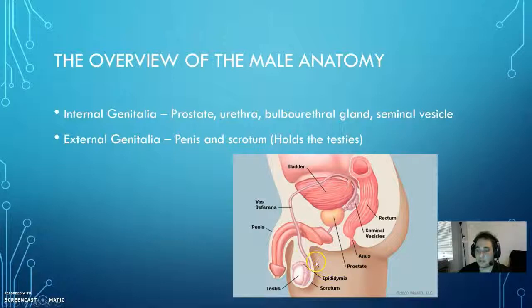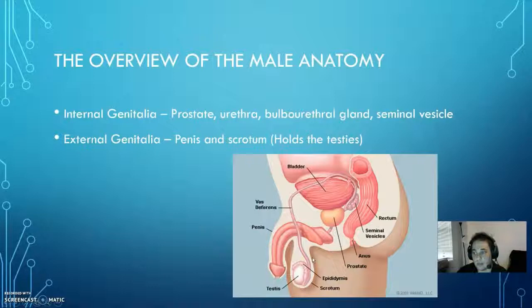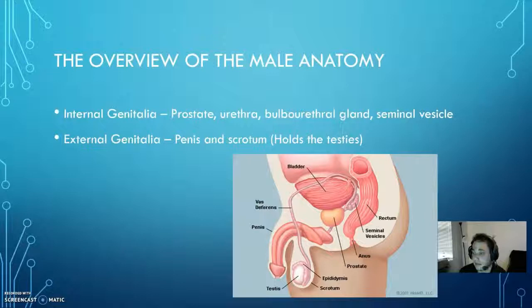The reason why the testes are located outside of the male anatomy is because they produce spermatogonium and spermatozoa, which need to be produced at a lower temperature than the human body. The human body is usually around 37 degrees Celsius, and sperm and male reproductive cells are produced at a temperature around 5 degrees lower — around 32 to 34 degrees Celsius — so it needs to lie outside of the male anatomy.